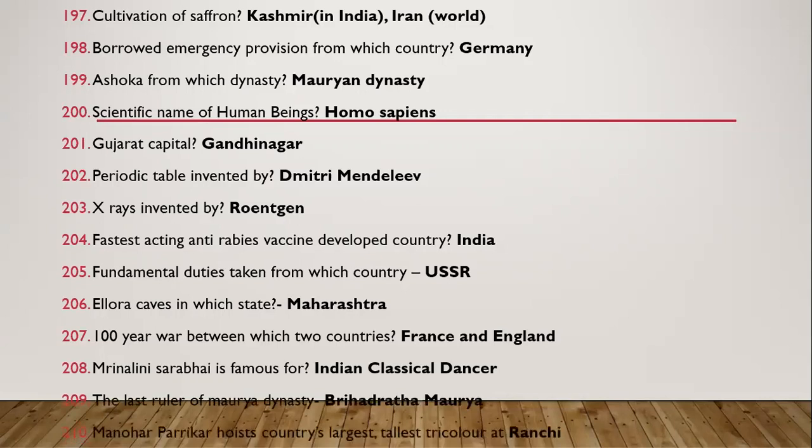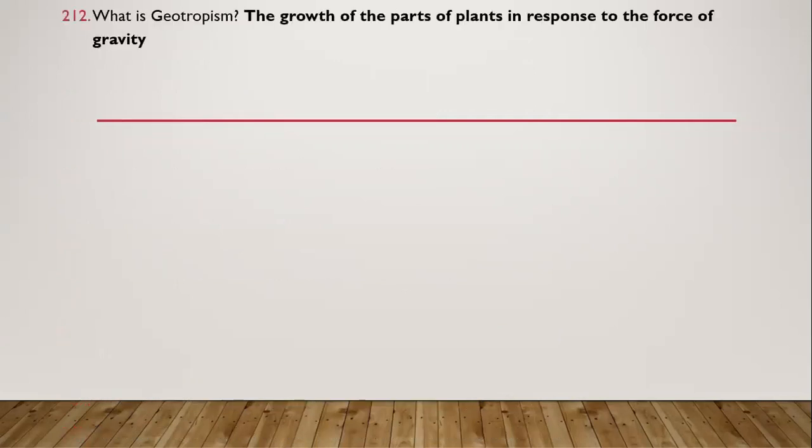Question 202: Manohar Parrikar holds the tallest national flag (tricolor) — it is in Ranchi. Question 203: What is geotropism? Geotropism is the growth of parts of plants in response to the force of gravity.